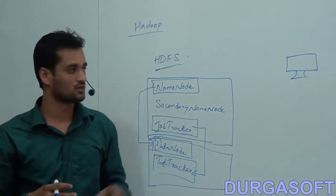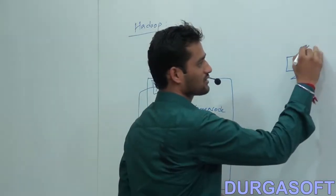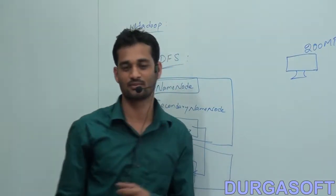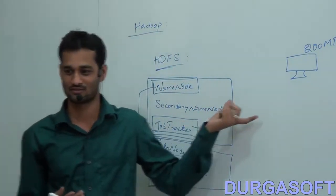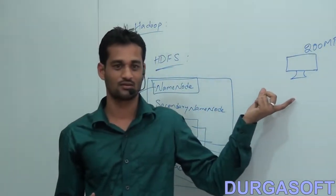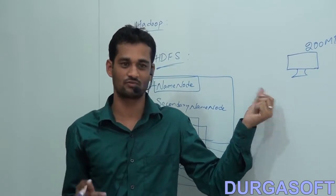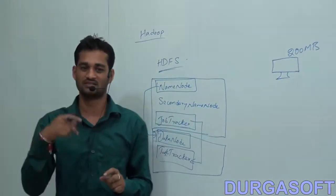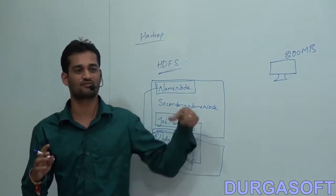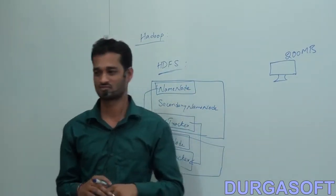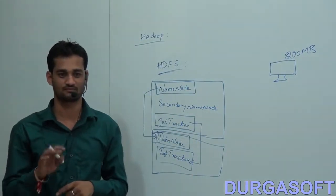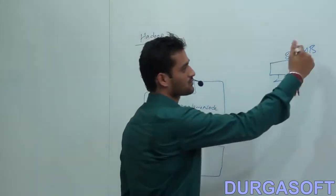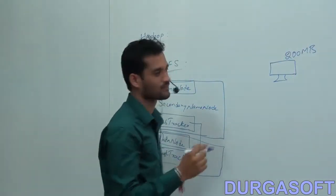Say this client has a file called file.txt, its size is 200 MB. For easy understanding, think of it as 500 TB of data. The client cannot process this data in time on his local machine, so he wants to split this data into a number of machines using Hadoop. As the HDFS block size is 64 MB, the 200 MB file will be split into blocks of 64 MB each.